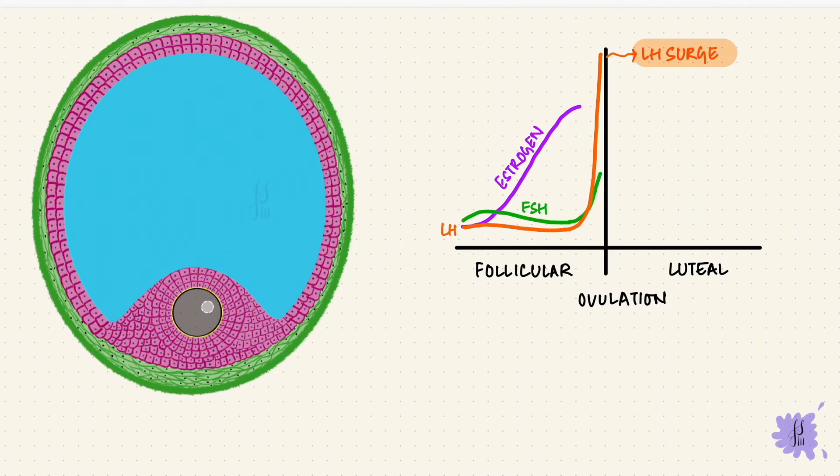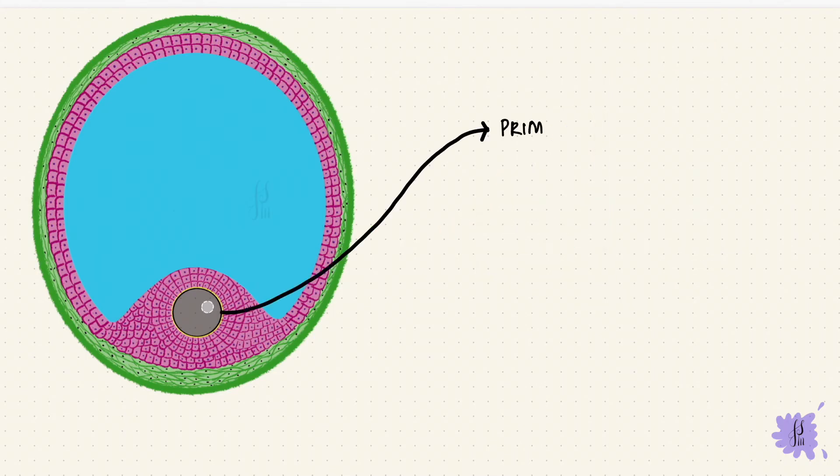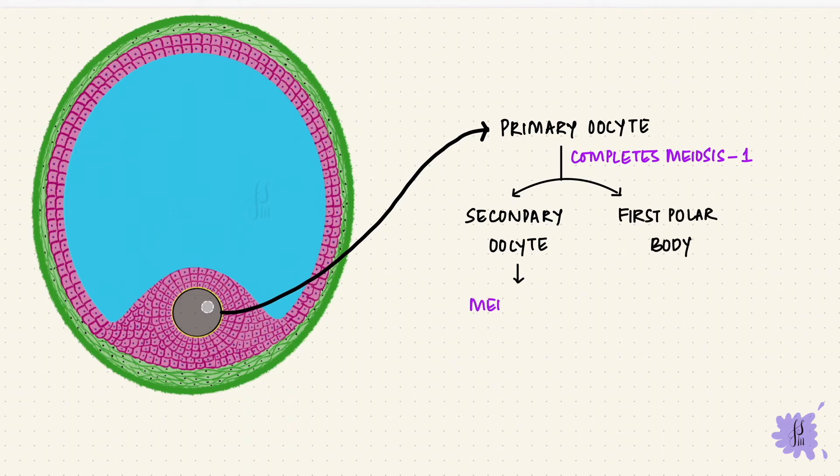This surge does a few things. One, it pushes that primary oocyte to complete the first meiotic division and form a secondary oocyte and the first polar body. The secondary oocyte quickly enters the second meiotic division and gets arrested in metaphase. This is the pre-ovulatory follicle or the mature Graafian follicle. Remember there's only one that reaches this stage. This is the follicle that is going to rupture at ovulation. How does that happen?